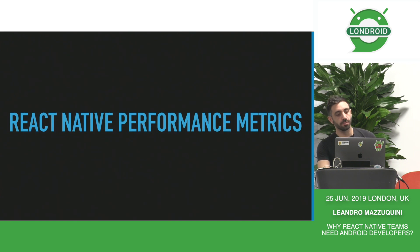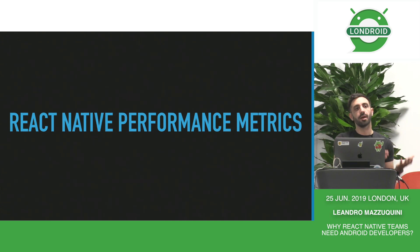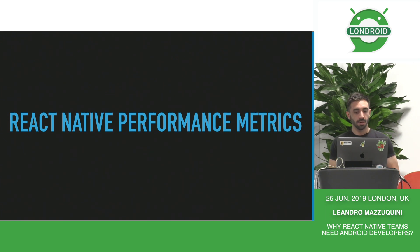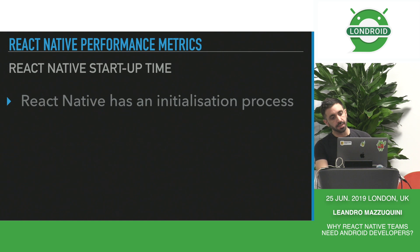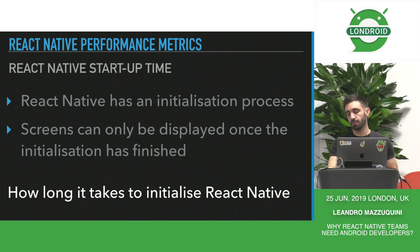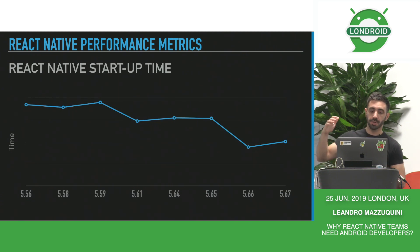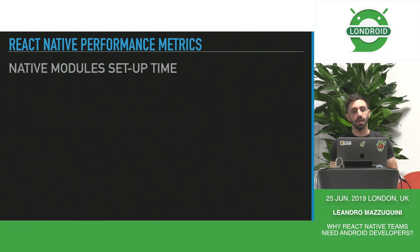Let's start with the first example: React Native performance metrics. This was the first thing I worked on, and back then we didn't have any React Native performance metrics. We want the best possible performance, but how can we achieve that if we don't know how good or bad React Native is performing? That's why we needed to introduce metrics — like React Native startup time. React Native needs to complete an initialization process, and screens can only be displayed once initialization has finished. So we're interested in knowing how long it takes to initialize React Native.